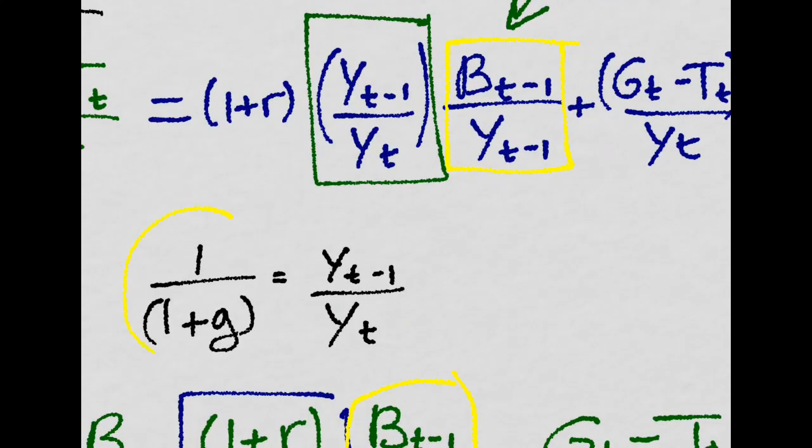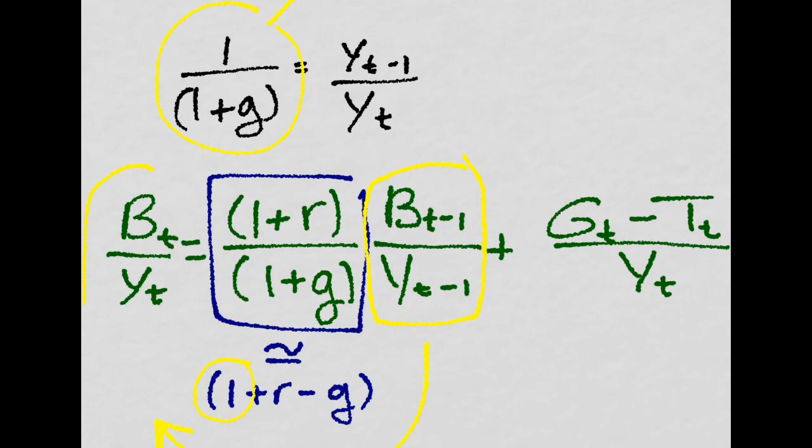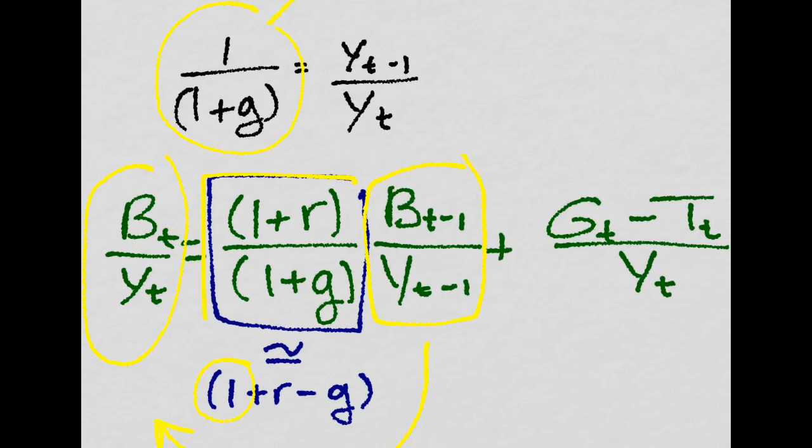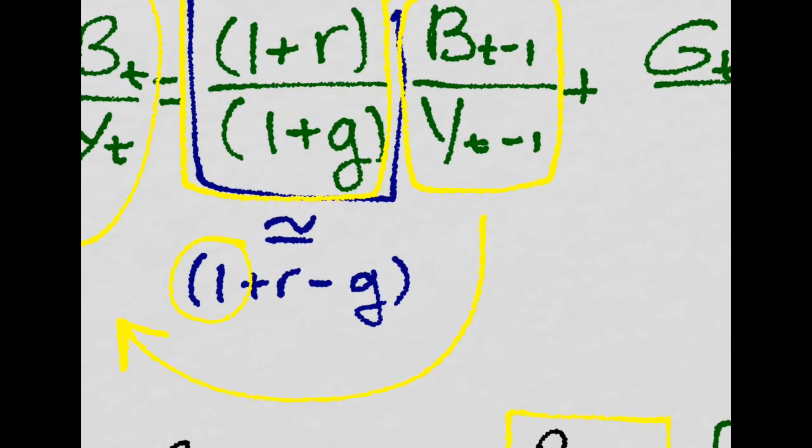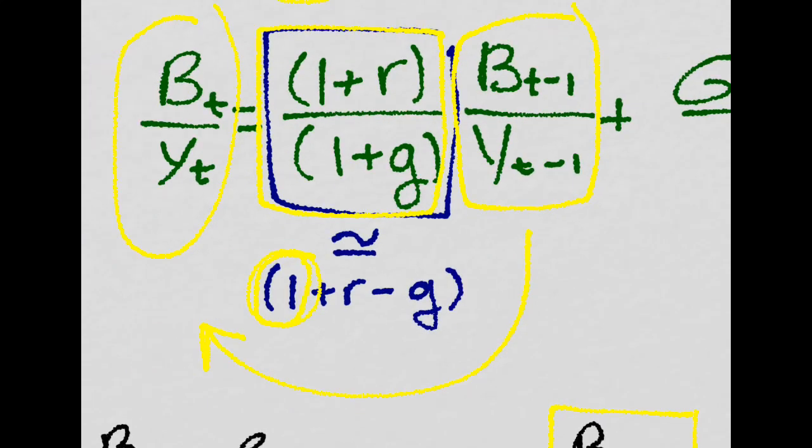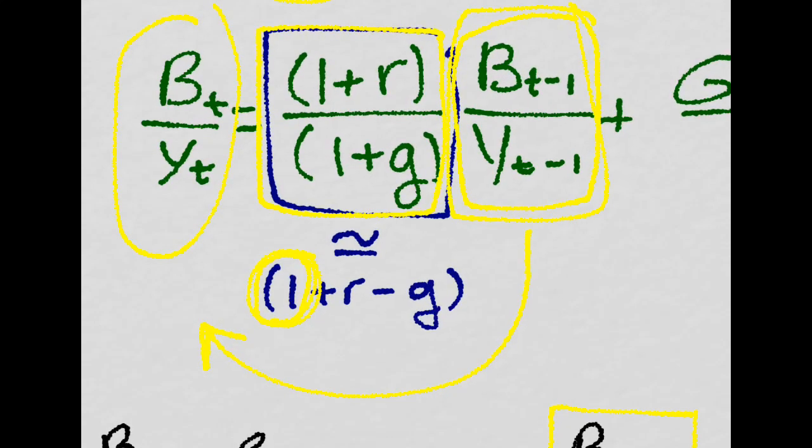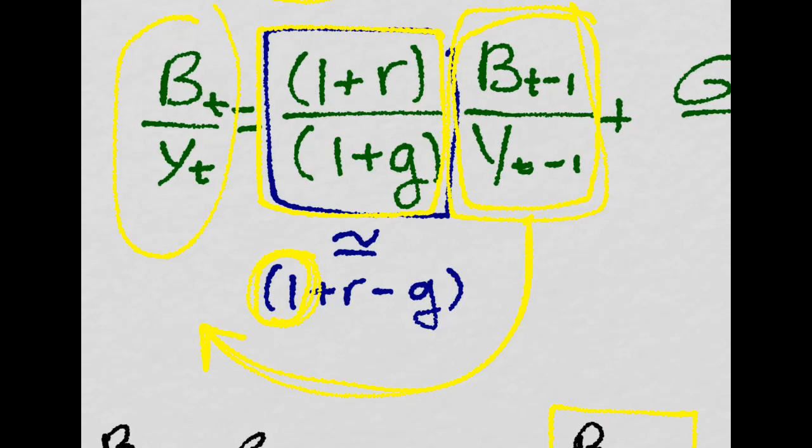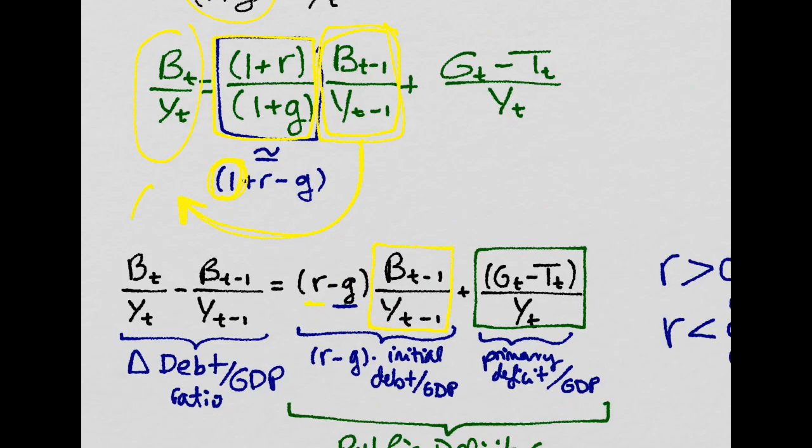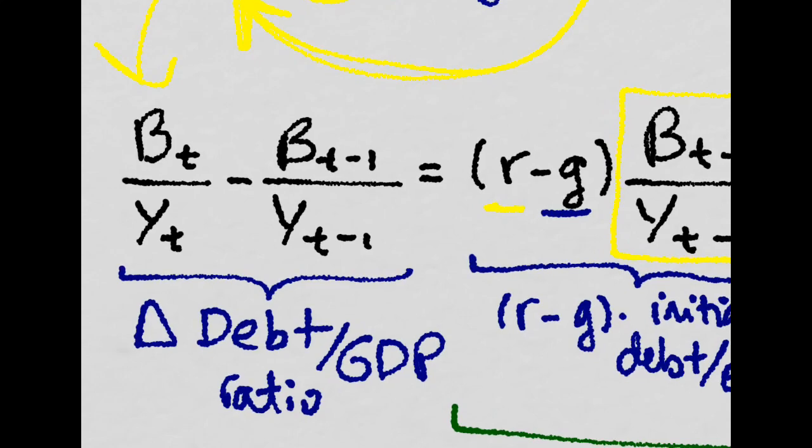So if we plug this instead of that thing over there, we will just get this. That the debt to GDP ratio today is equal to 1 plus R over 1 plus G, which, if we approximate, will just be equal to 1 plus R minus G. And we can multiply this 1 times the previous level of the ratio of debt to GDP, and pass it all the way over there. And that way, we will get the change in the debt to GDP ratio for that year.